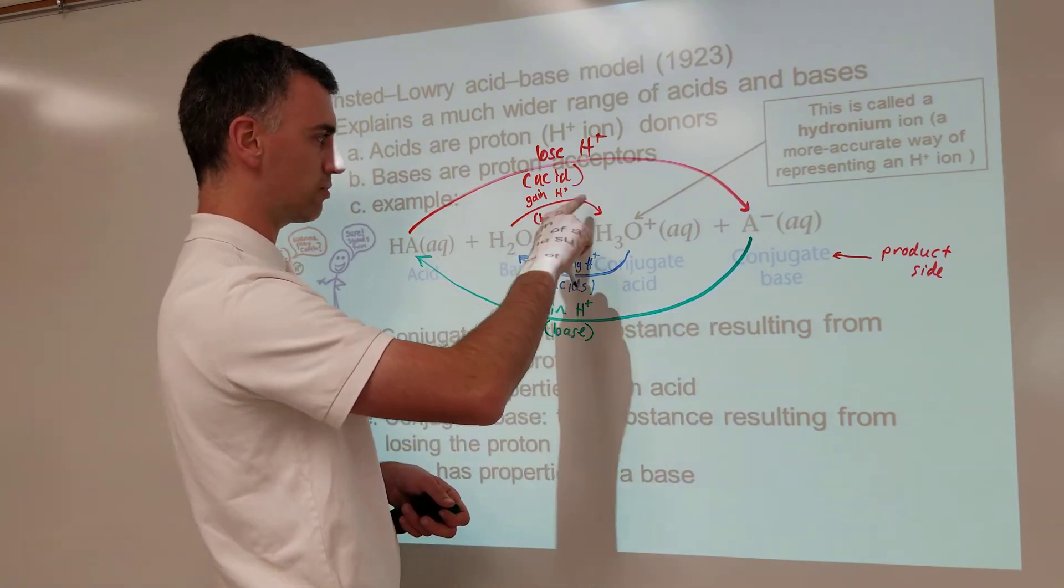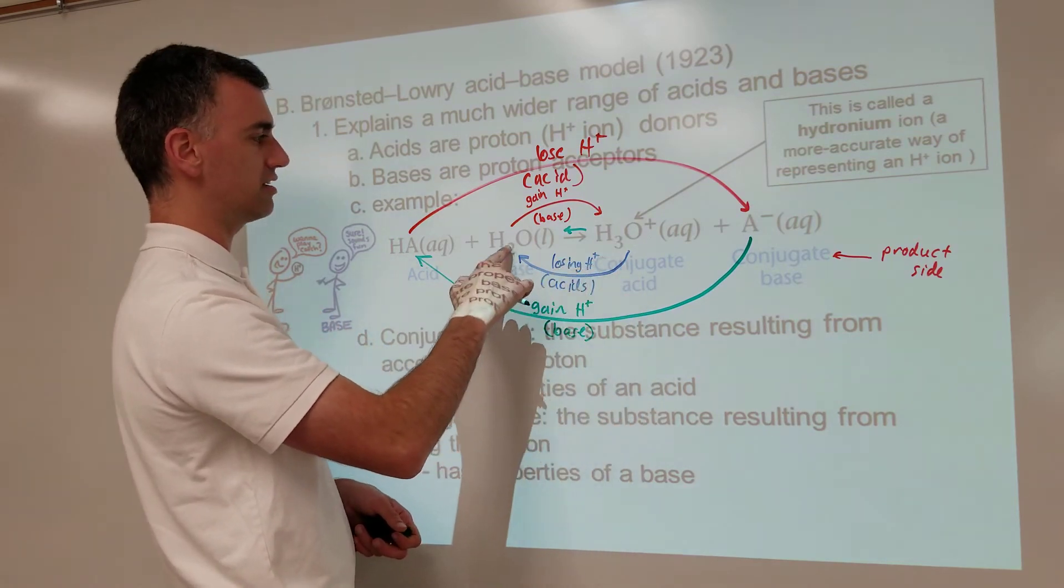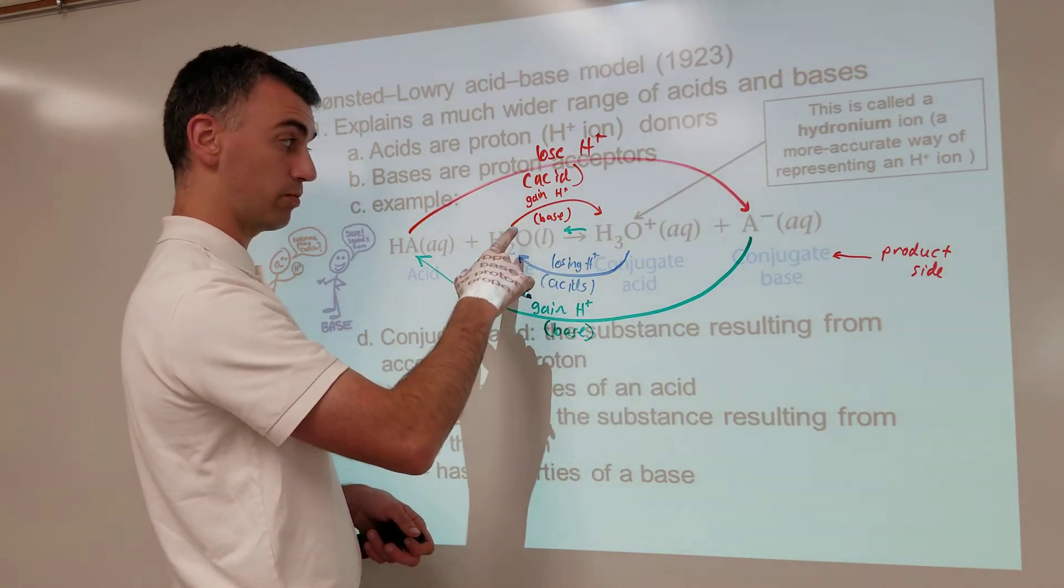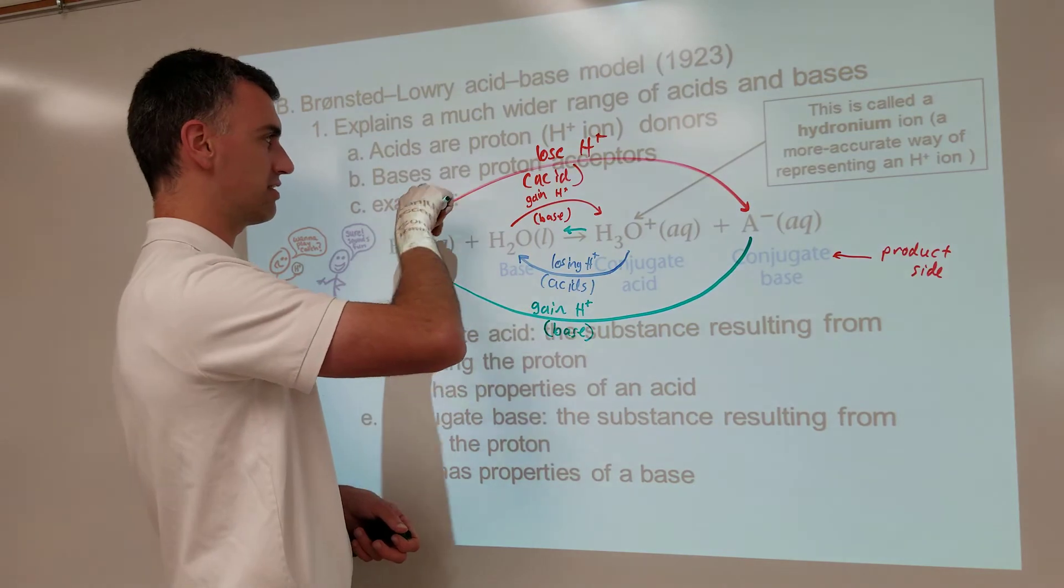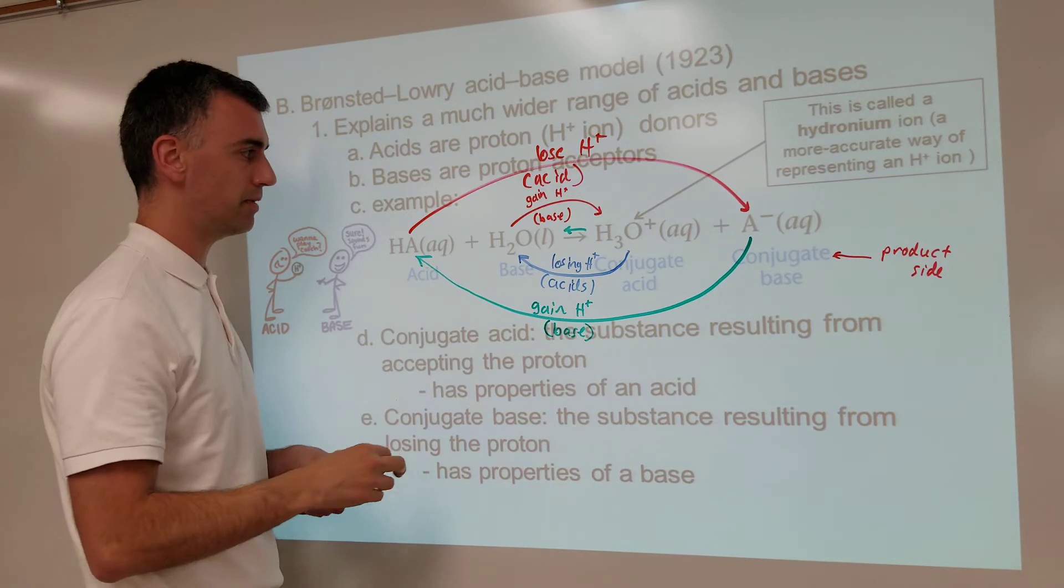This is a base because when going in this direction, it's accepting a proton. This is an acid because when going in this direction, it's losing a proton. This is an acid because when going in this direction, it's losing a proton. So that's what makes an acid an acid or a base a base.